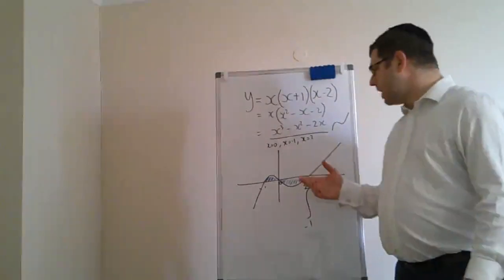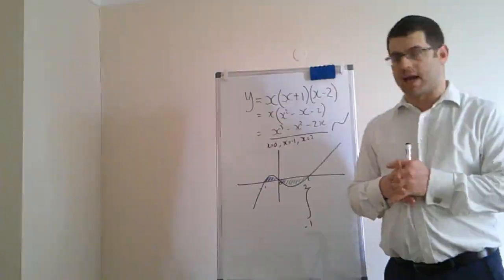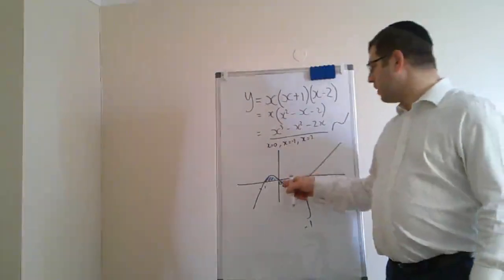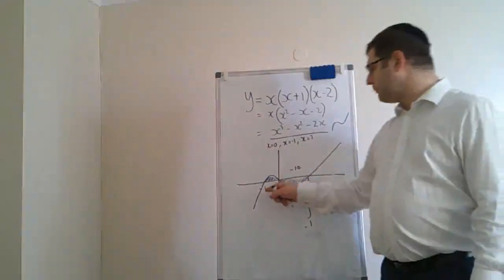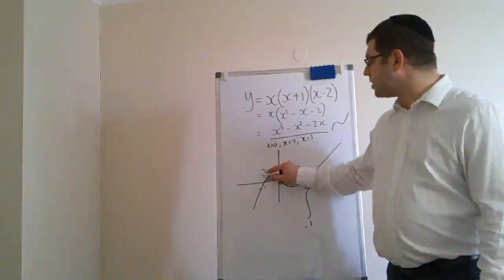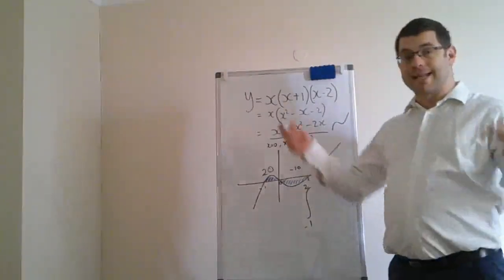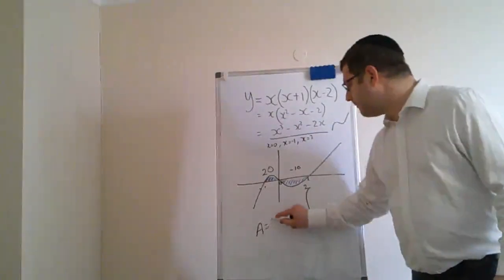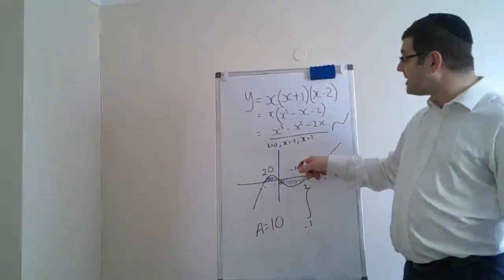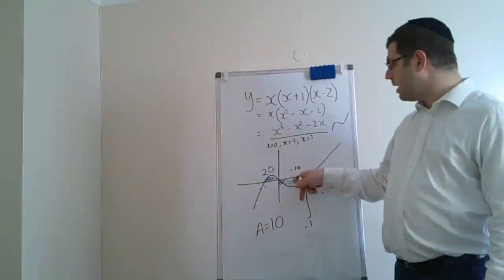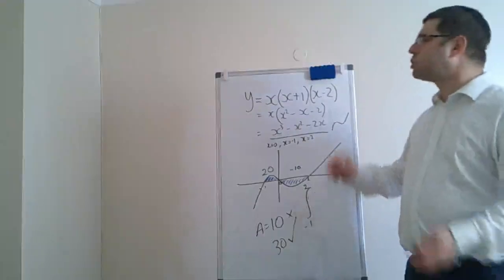However, this is very problematic based on what we learnt in the last video. When you integrate between 0 and 2, the result will be negative because that area is below the x-axis. Let's say that integral gives −10, and the integral between −1 and 0 gives +20. If you integrate from −1 to 2 in one go, you get 20 − 10 = 10. But clearly that's wrong — the true total area is 20 + 10 = 30. The minus just means it's below the x-axis.